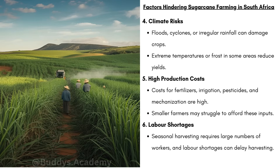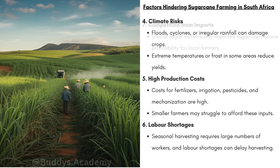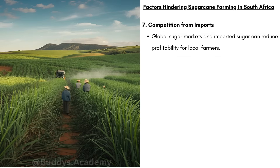We then have high production costs. Costs for fertilizers, irrigation, pesticides and mechanization are high, and when these costs add up, they lead to lower profits. We also have labor shortages — seasonal harvesting requires large numbers of workers, and labor shortages can delay harvesting. If there aren't enough workers, the quality of the cane will decline. Finally, there is competition from imports. Global sugar markets and imported sugar can reduce profitability for local farmers, making it harder for South African farmers to compete and earn a stable income.